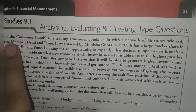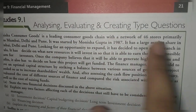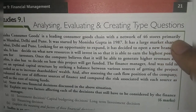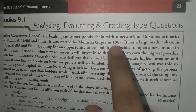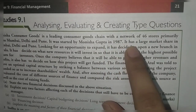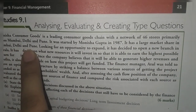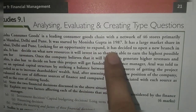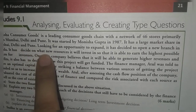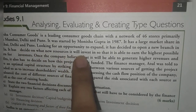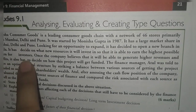The first case study: Manisha Consumer Goods is a leading consumer goods chain with a network of 46 stores primarily across Delhi, Mumbai, and Pune. It was started by Manisha Gupta in 1987. It has a large market share in Mumbai, Delhi, and Pune. Looking for an opportunity to expand, it has decided to open a new branch in Kerala. It has decided on what new resources it will invest in so that it is able to earn the highest possible return for the investor.